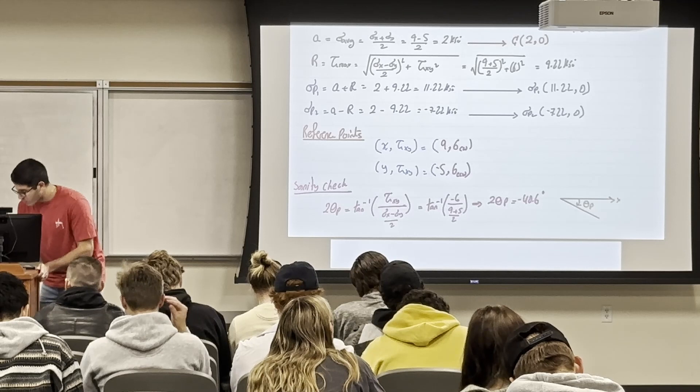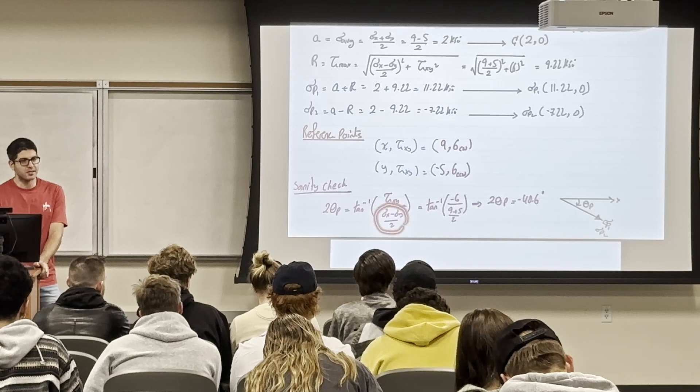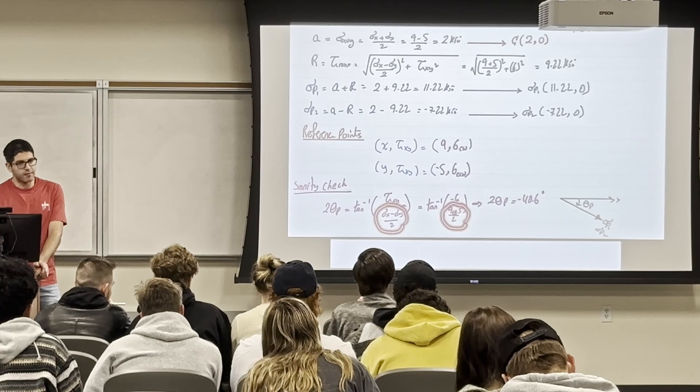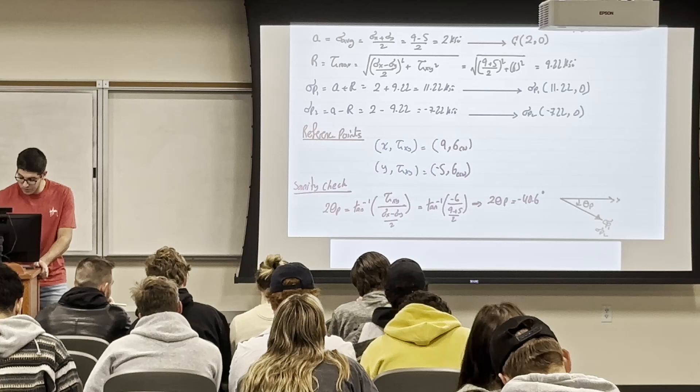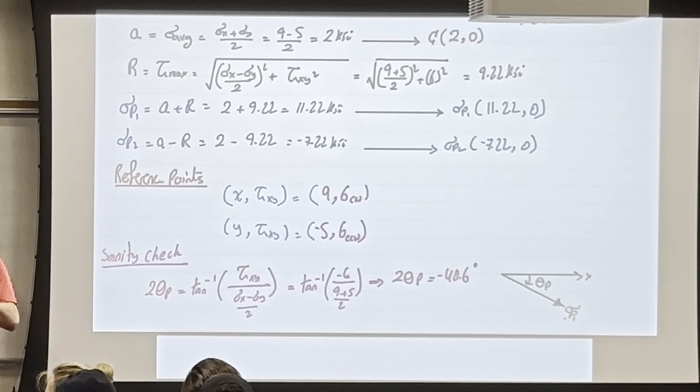All points on the right half experience tensile normal stress; all points on the left experience compressive normal stress. Now let's plot the reference points: X = (9, 6 clockwise), so go to σ=9 and place the point at 6 clockwise — that point is here on the circle. Y = (−5, 6 counterclockwise), so at σ=−5 and 6 counterclockwise — that point is here on the circle.